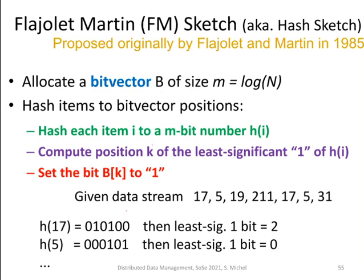The next approach is called Flajolet-Martin sketch. This is an estimator for the number of distinct elements in a stream. What we do here is to create a bit vector, which then can be used to get an estimate for this number. Let me introduce this with a drawing instead of going through the slide first.